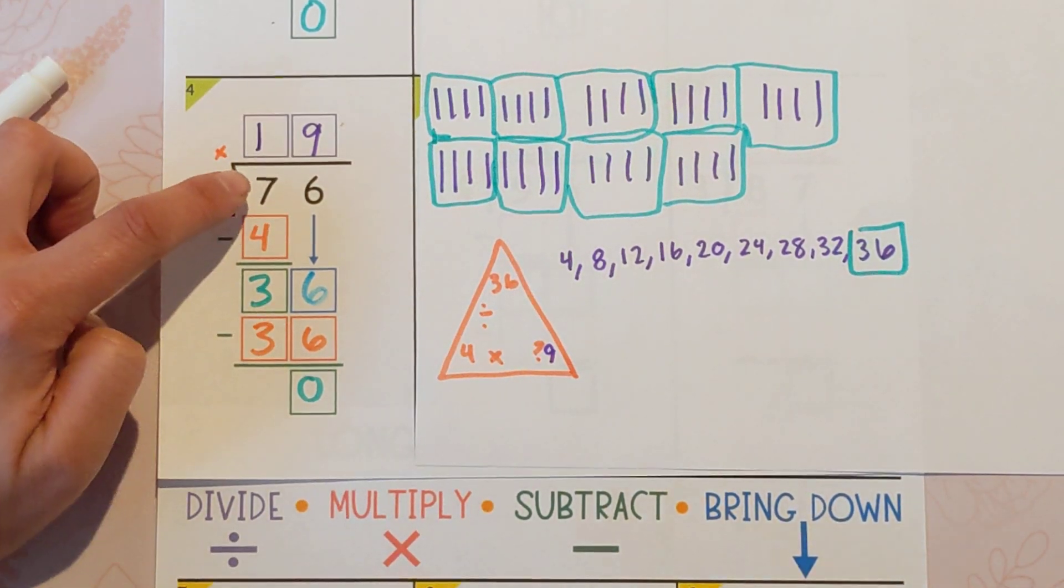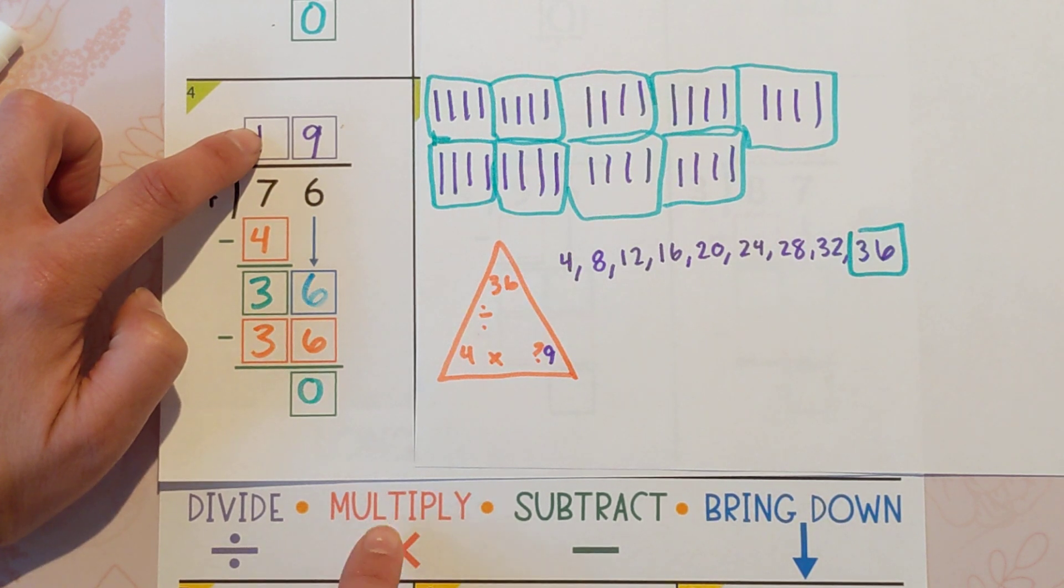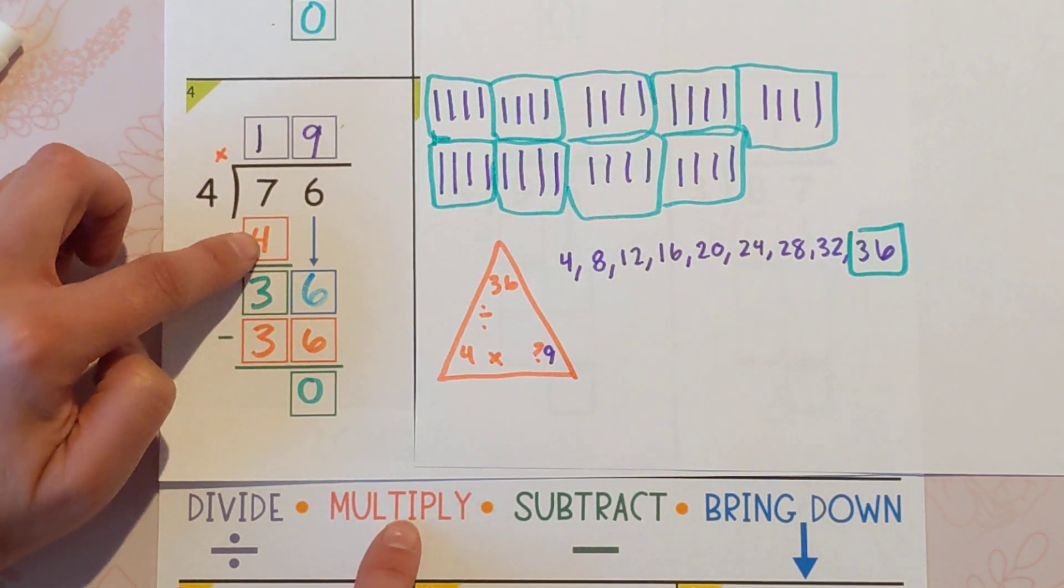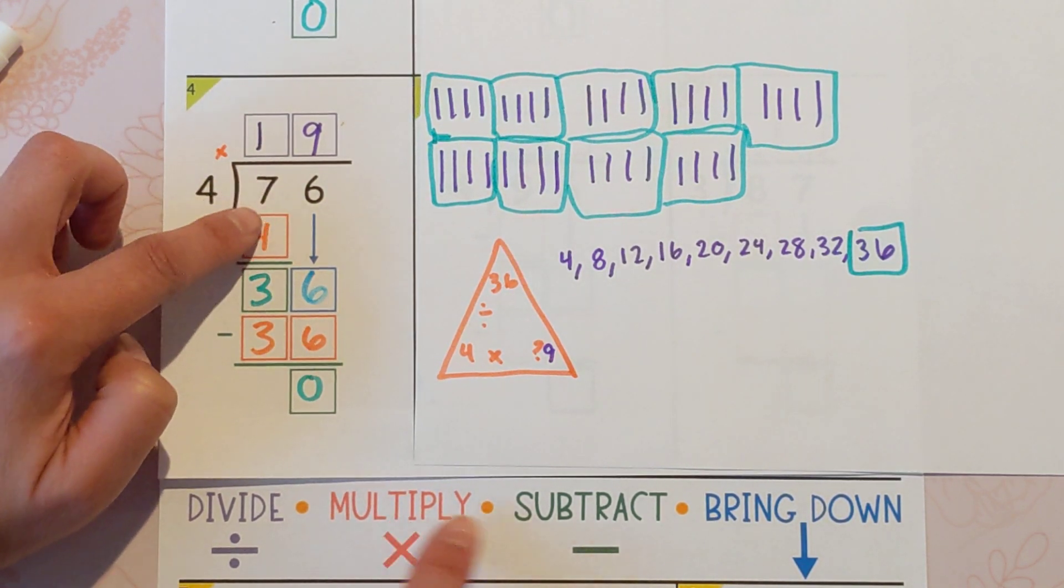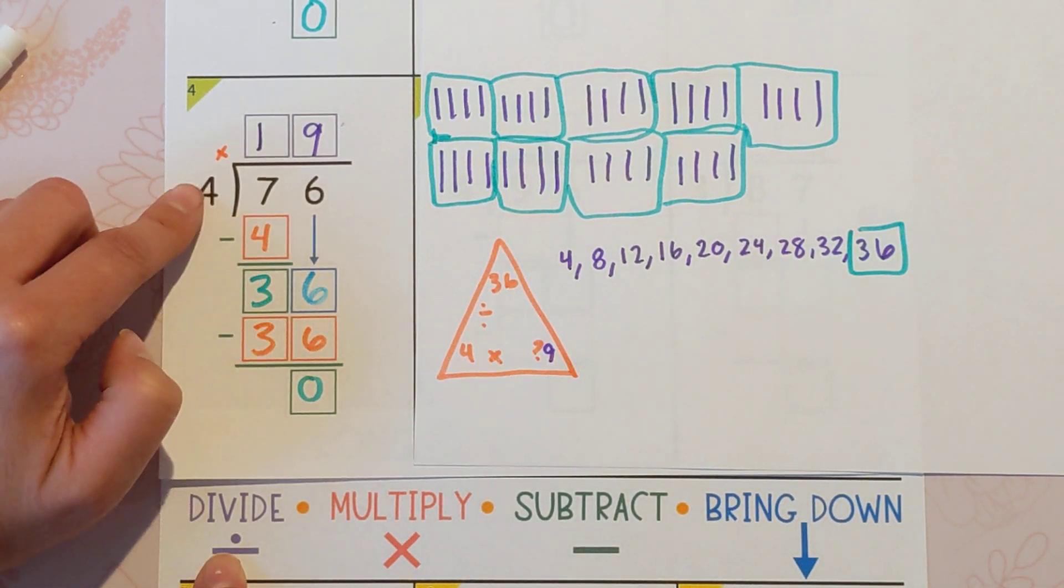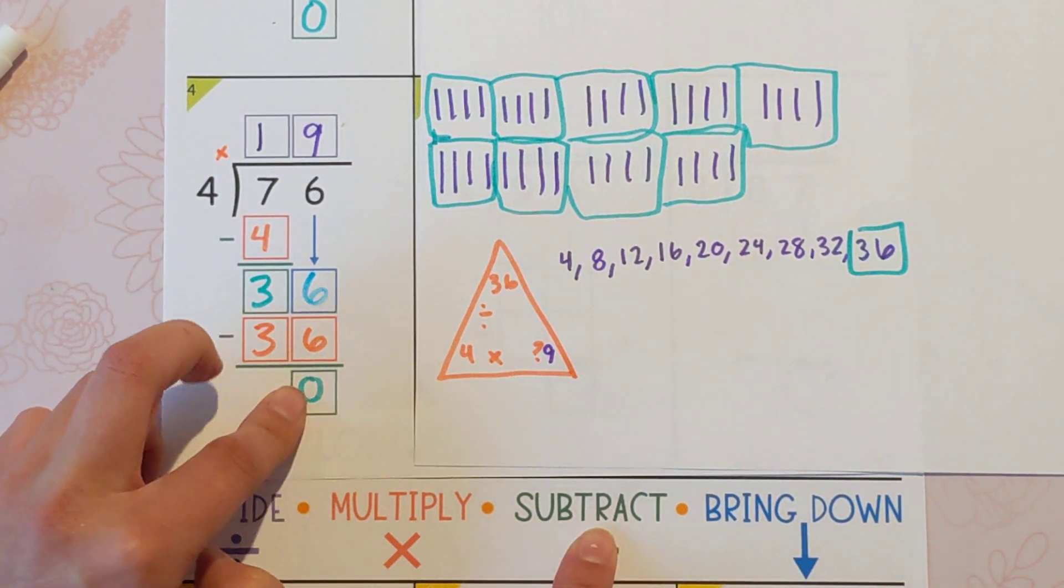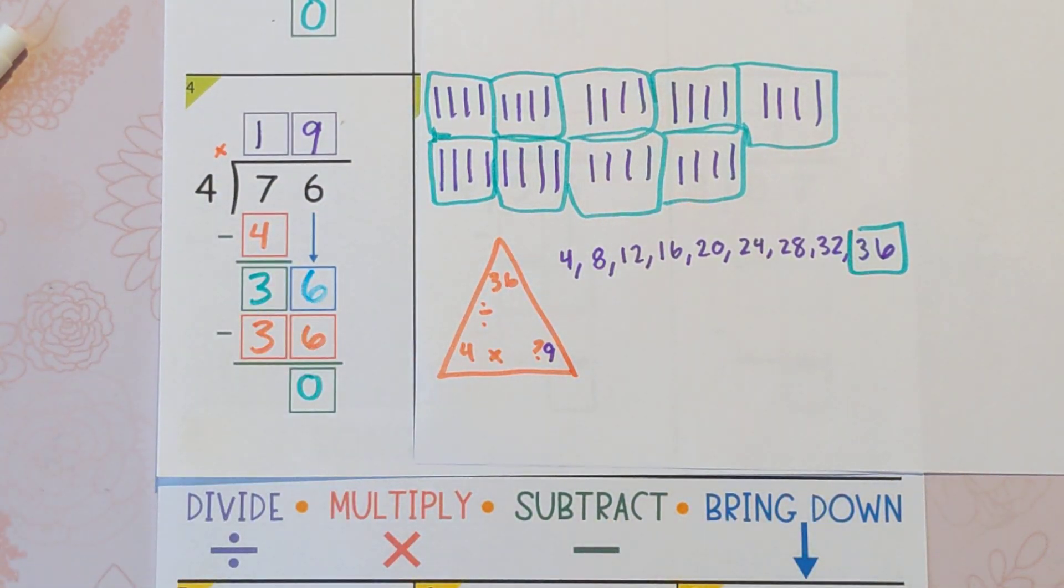So let's do a quick recap. We did seven divided by four, which is one. Multiply: one times four is four. Subtract: seven minus four is three. Bring down the six. Start over. 36 divided by four is nine. Nine times four is 36. Subtract. Nothing left over. Nothing left to bring down.